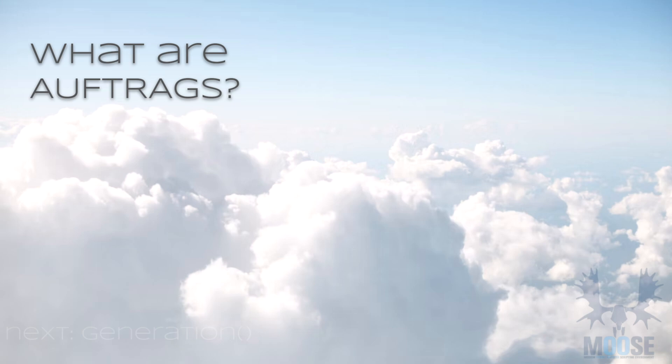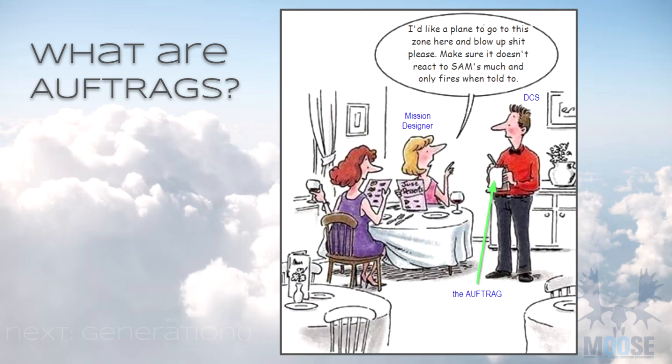What are Auftrags? In a basic sense, if you imagine you're in a restaurant and you ask the waiter for some food, he writes down your order, then it goes to the kitchen, your order is made up, and it comes out. The order that's written down is an Auftrag. The literal word means 'order' in German.